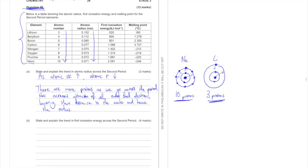Fantastic. Let's jump into B. State and explain the trend in first ionization energy across the second period. Now once again, it says state, so that's the first thing we better do. And I'm going to write down as atomic number increases, first ionization energy, let's see what happens. As our atomic number increases, the first ionization energy also increases. Now again, let's try and understand why.